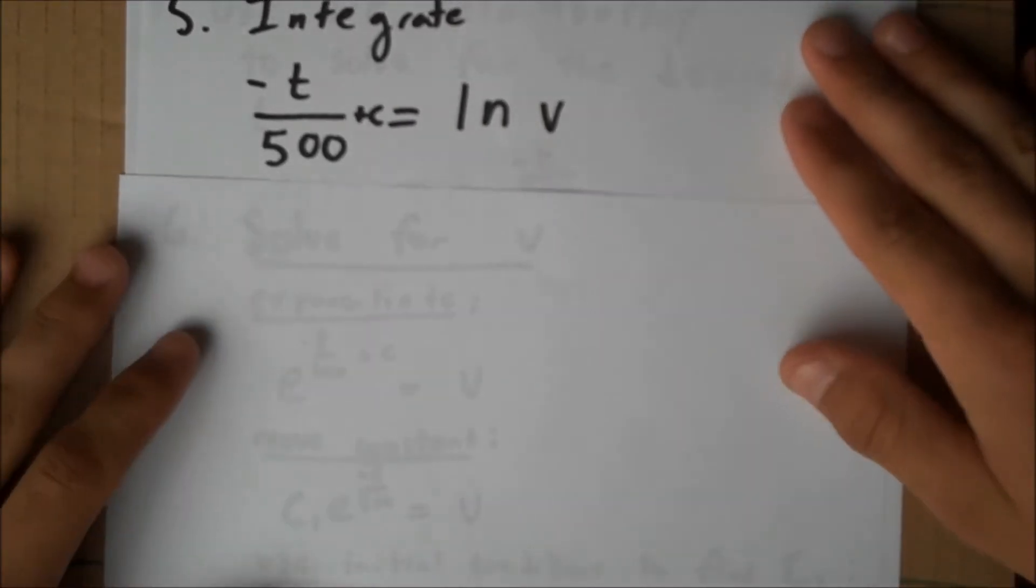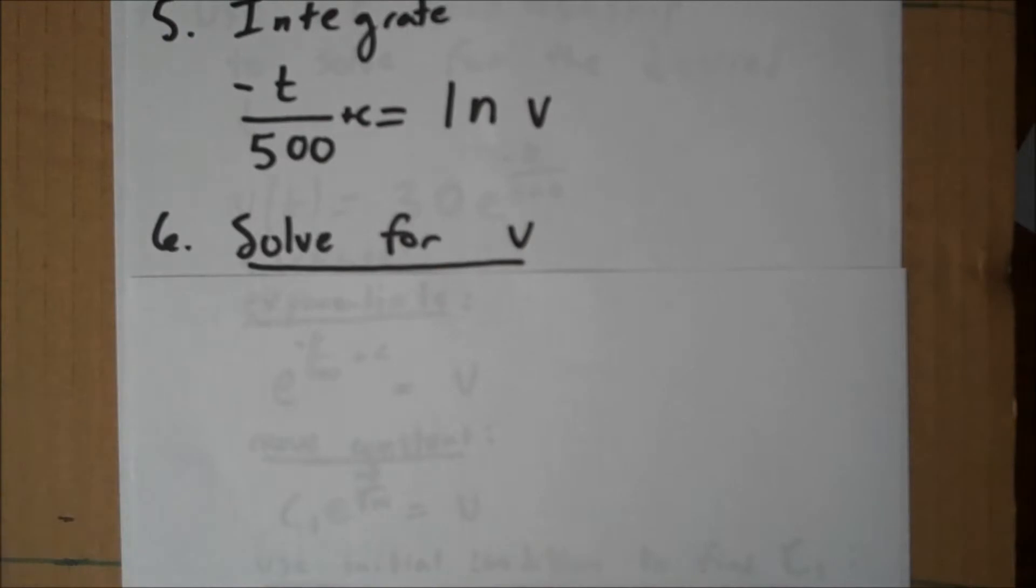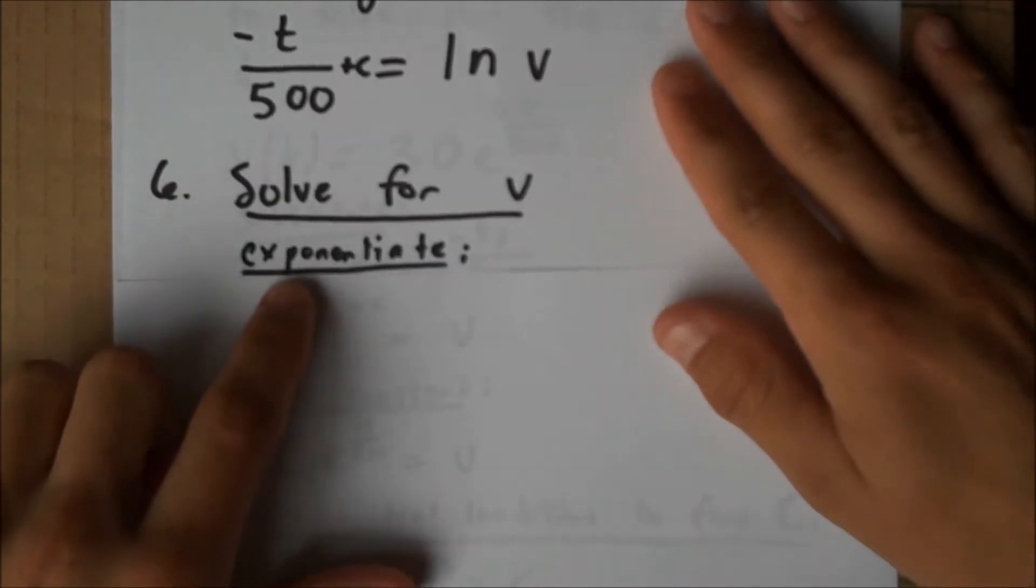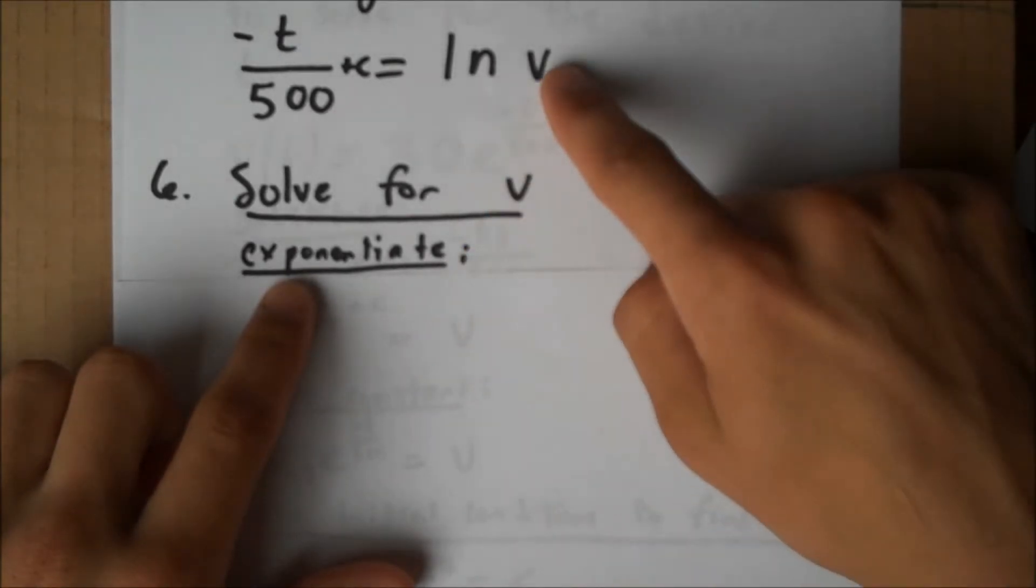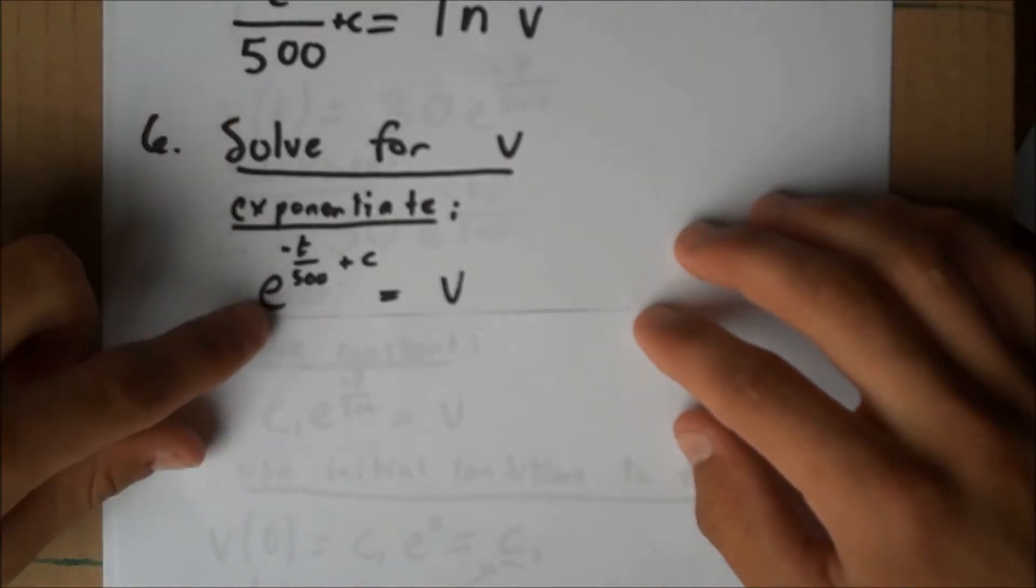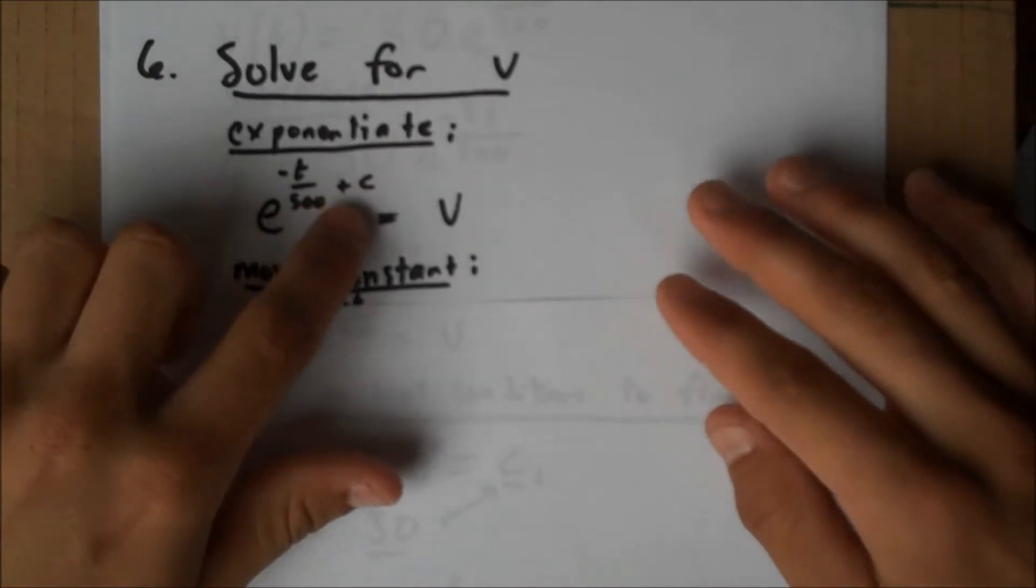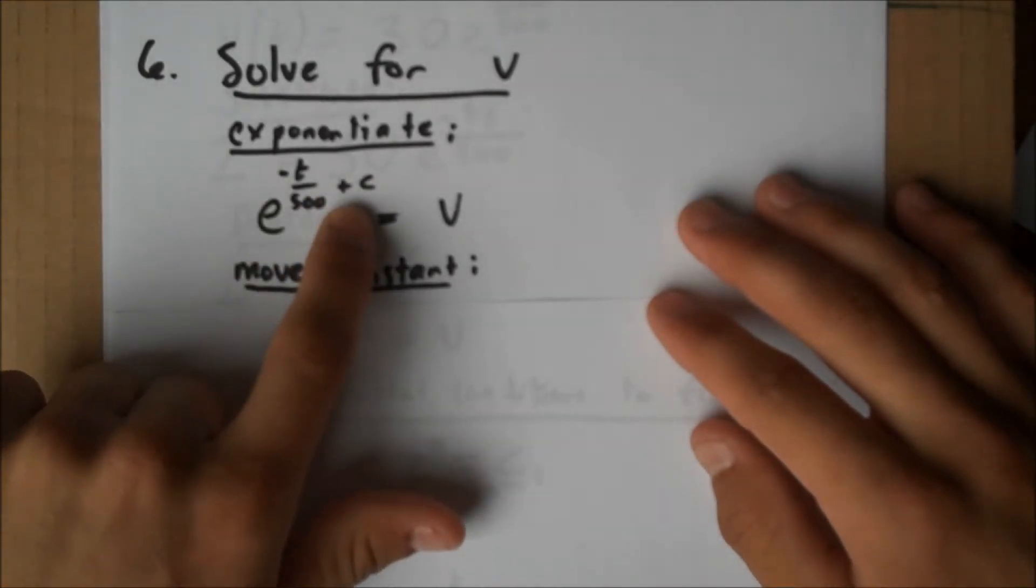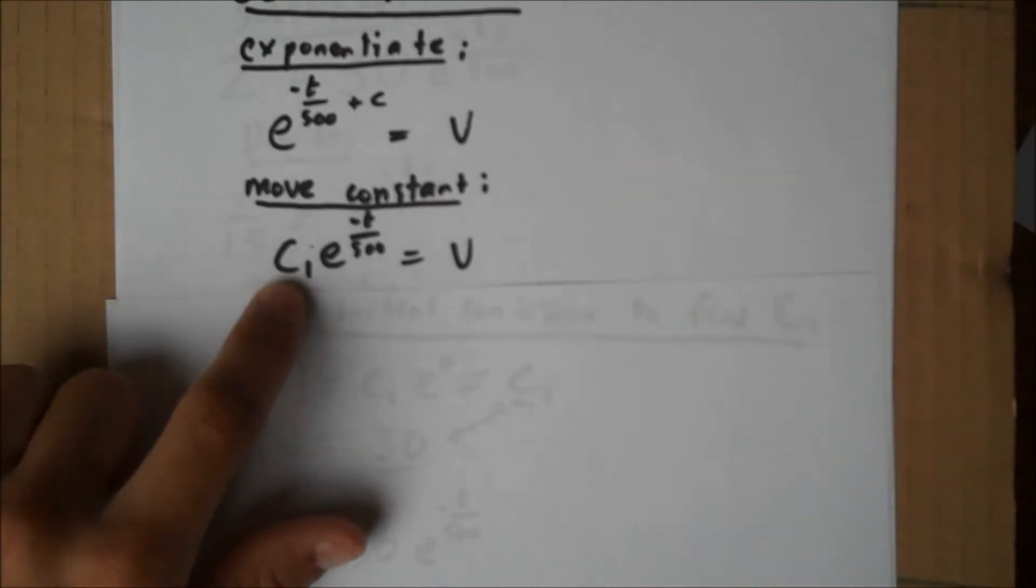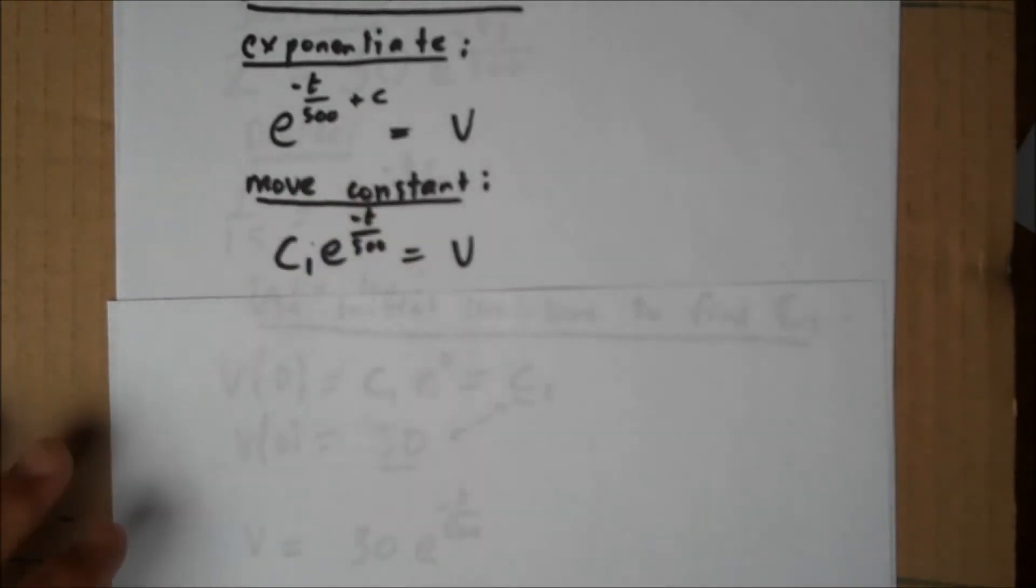Now that we've integrated, we now have v and t in an equation that relate their values. Let's solve for v. First we'll exponentiate both sides. Exponentiating the natural log of v gives us just v. And exponentiating this, we'll just put it in an exponential. We'll move the constant, this additive constant in an exponent, as you know, becomes a multiplicative constant on the outside, v equals c1 times e to the negative t over 500.